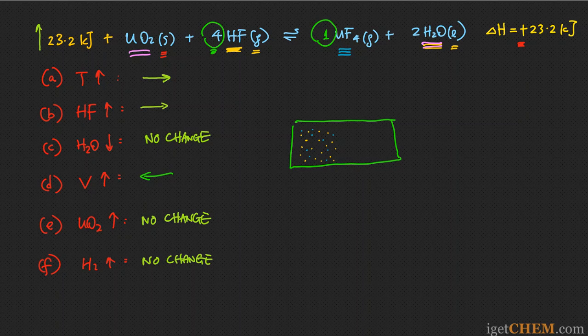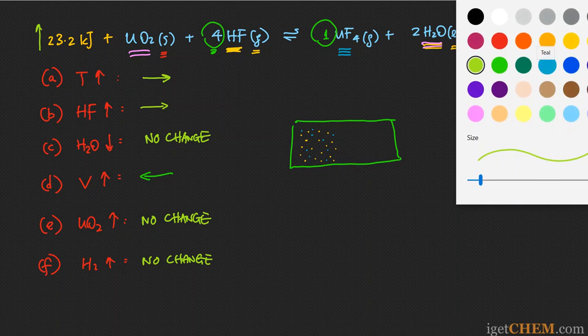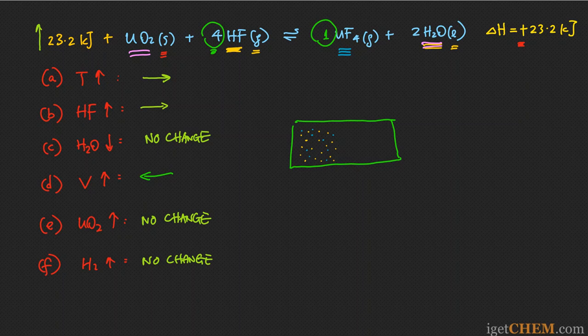Before leaving this problem, let me say one more thing about the equilibrium constant expression for this heterogeneous equilibrium — meaning the reactants and products are in different physical states. UO₂ is solid, HF is gas, UF₄ is gas, and H₂O is liquid. UF₄ is a gas, so I can use the partial pressure of UF₄ to represent its equilibrium content.